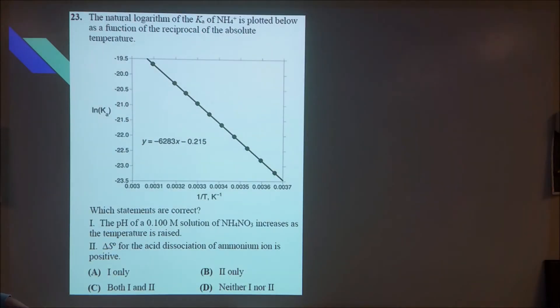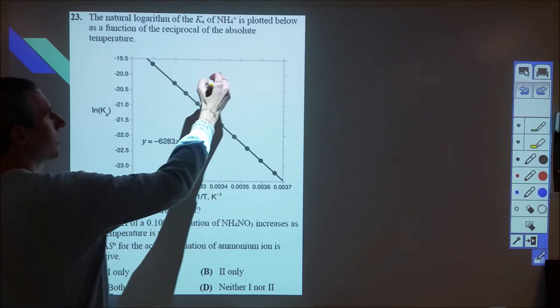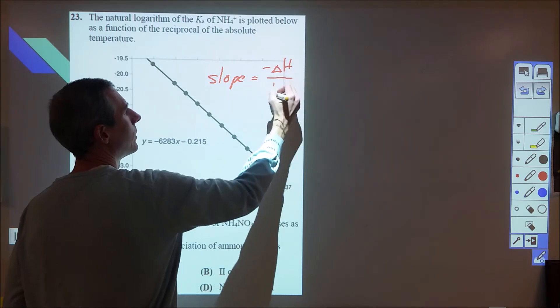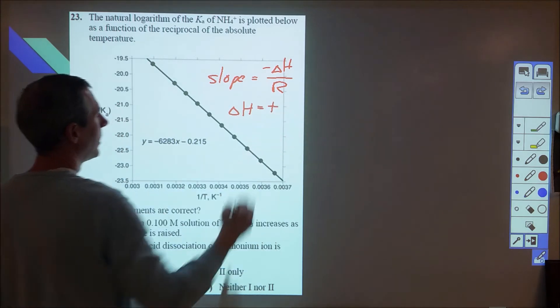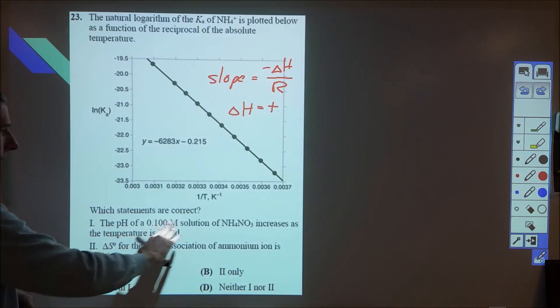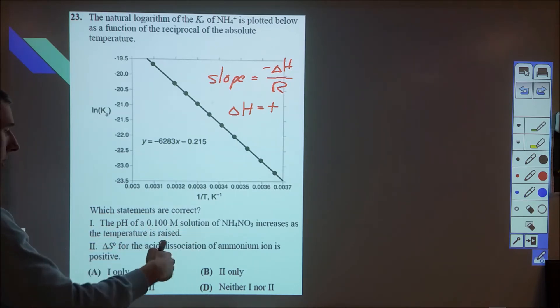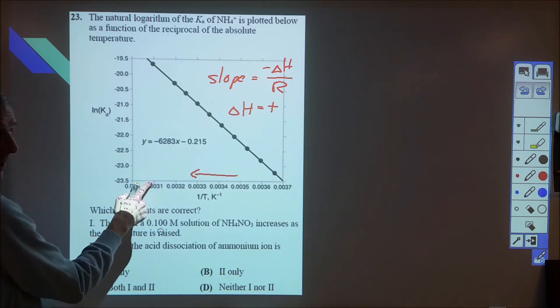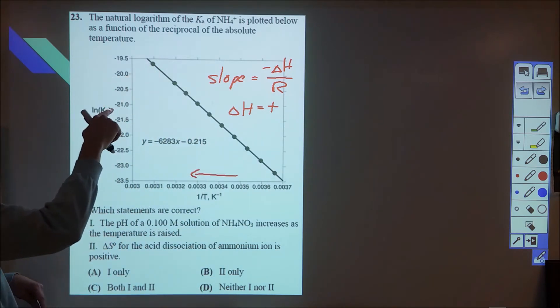23 here is another tricky one. So this one, we have a natural log of equilibrium constant versus 1 over temperature. That immediately prompted me to go to slope is equal to negative enthalpy over R. So since the slope here is negative, that means that our enthalpy change is positive. Okay, so now we're going to go ahead and look at what they're looking at. They're looking at ammonium nitrate. And the first problem says the pH of a 0.1 molar solution increases as temperature is raised. Now, as temperature raised, we go in this direction on the graph. And as we do that, the natural log of K is increasing, becoming more positive.